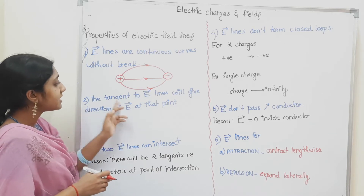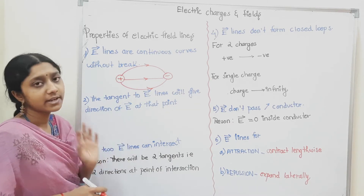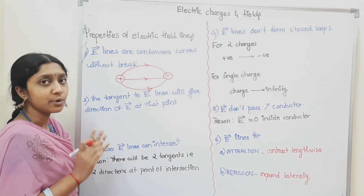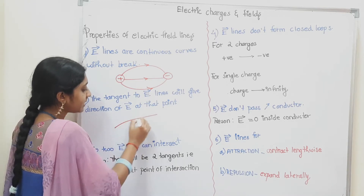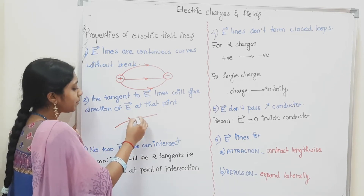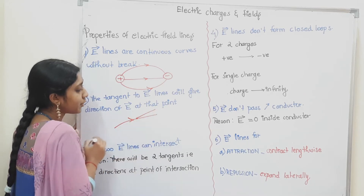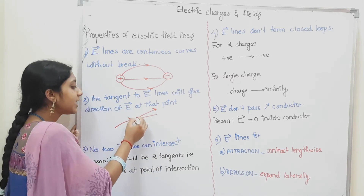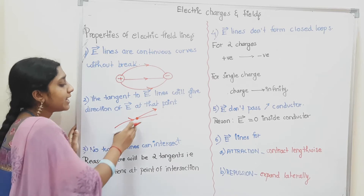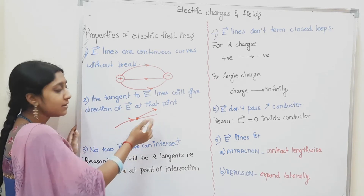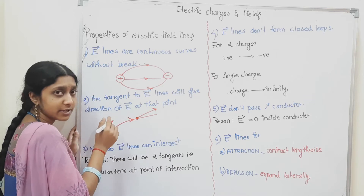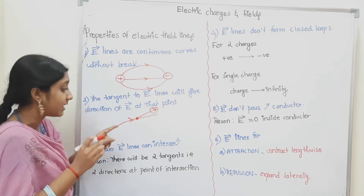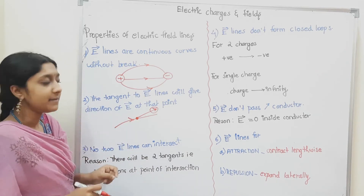What is the tangent to the electric field lines? The tangent to the electric field lines will give the direction of the electric field at that point. This is already part of the definition of electric field. For example, if we take a point on the electric field line, the tangent at that point gives the direction of the electric field at that point. This is the second point.